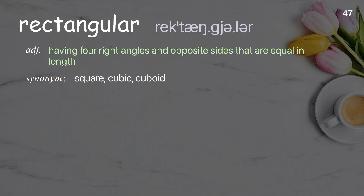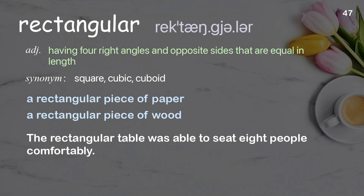Rectangular: Having four right angles and opposite sides that are equal in length. Examples: A rectangular piece of paper. A rectangular piece of wood. The rectangular table was able to seat eight people comfortably.